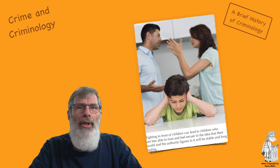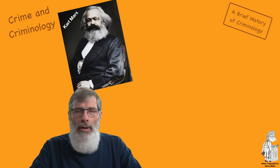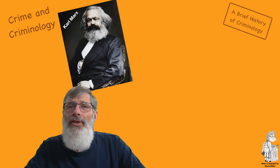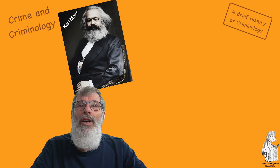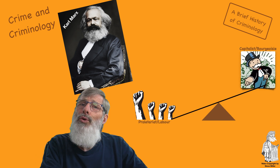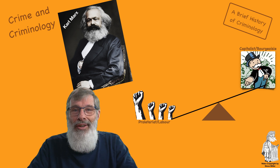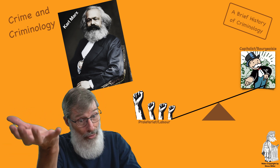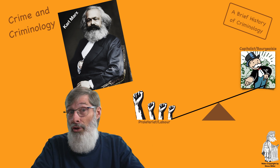Karl Marx was influential in the development of conflict criminology, which views human behavior as shaped by economic and political forces and sees crime as a function of class conflict. The class conflict is the relationship between the owners of the means of production — whom he called the capitalists or bourgeoisie — and the people who do the work and sell their labor, called the proletariat or working class. Marx examined the consequences of this inequity and the exploitation of workers.